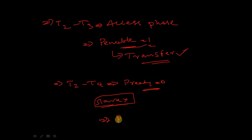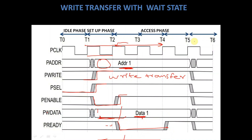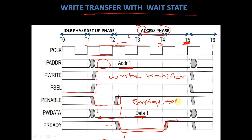Until Pready gets asserted to 1, the Access Phase extends itself from T2 to T5. This is the write transfer with wait state. The Access Phase is waiting for Pready to get equal to 1. When Pready gets equal to 1, the transfer of data takes place from bridge to APB interface. Until then, the bridge waits for the signal Pready to get asserted to 1.